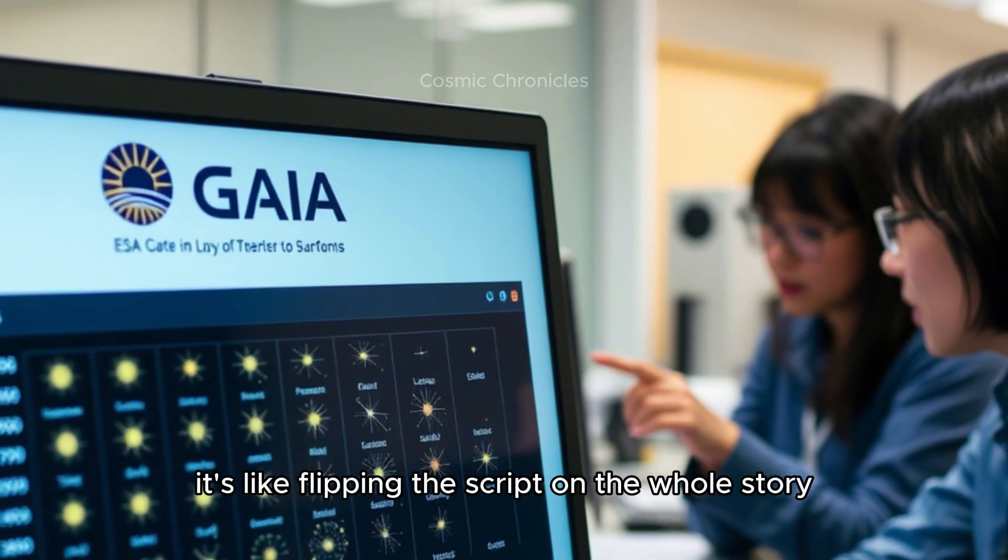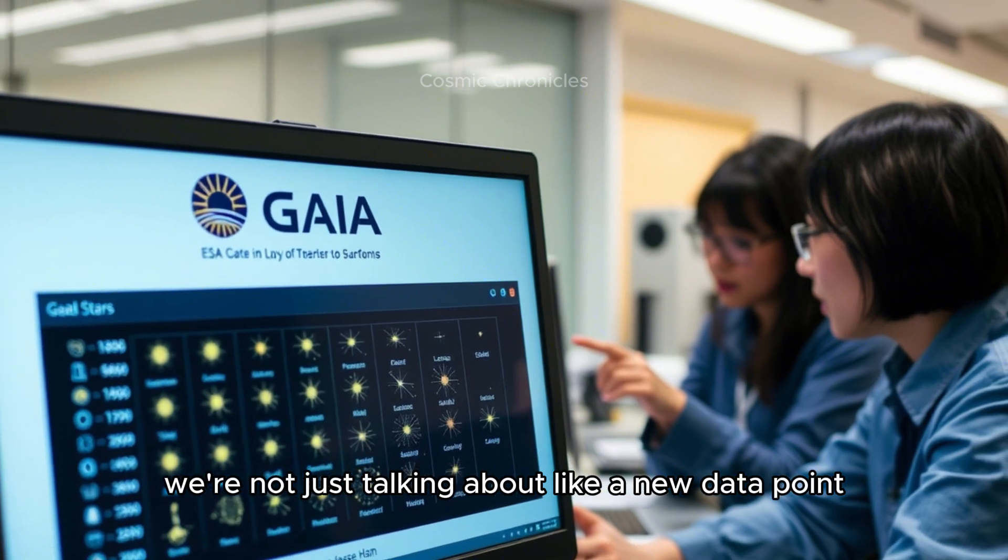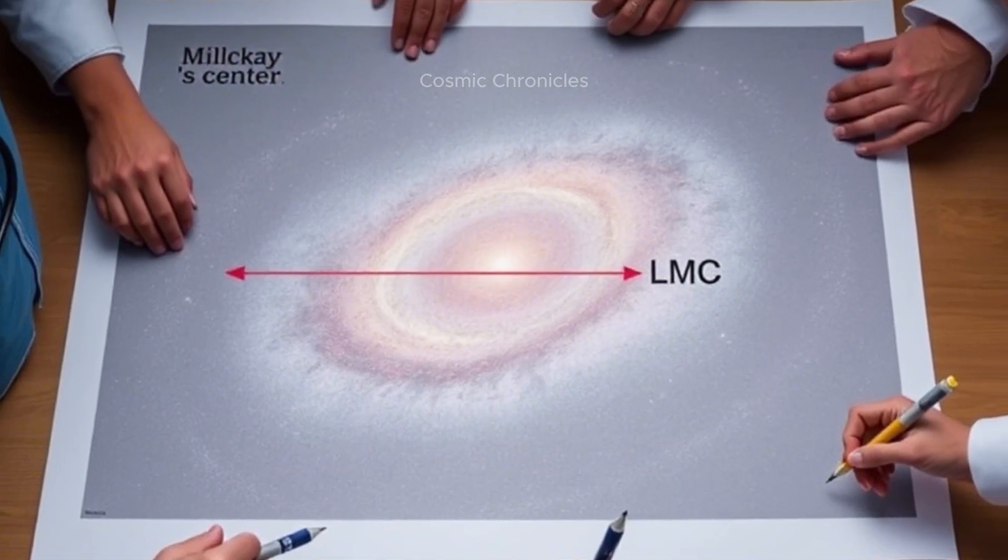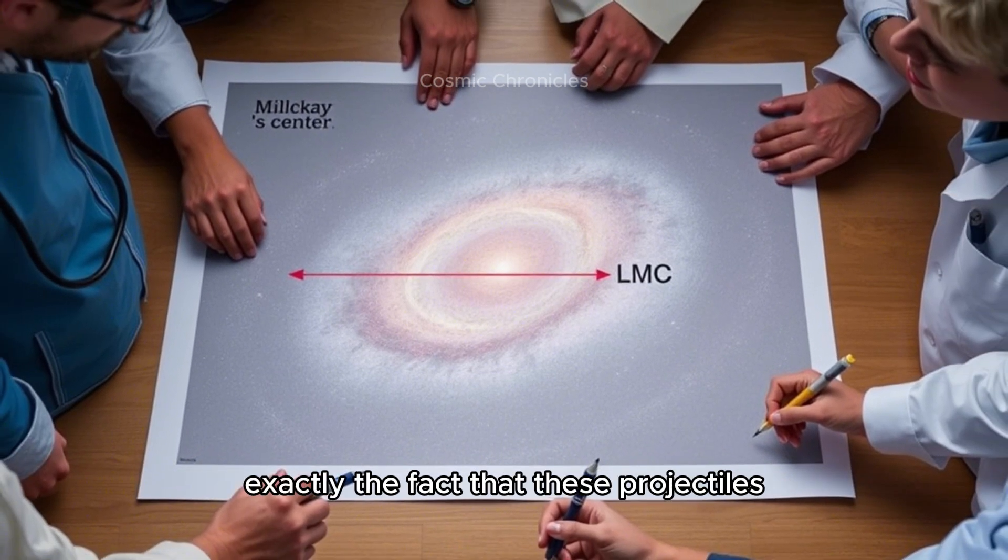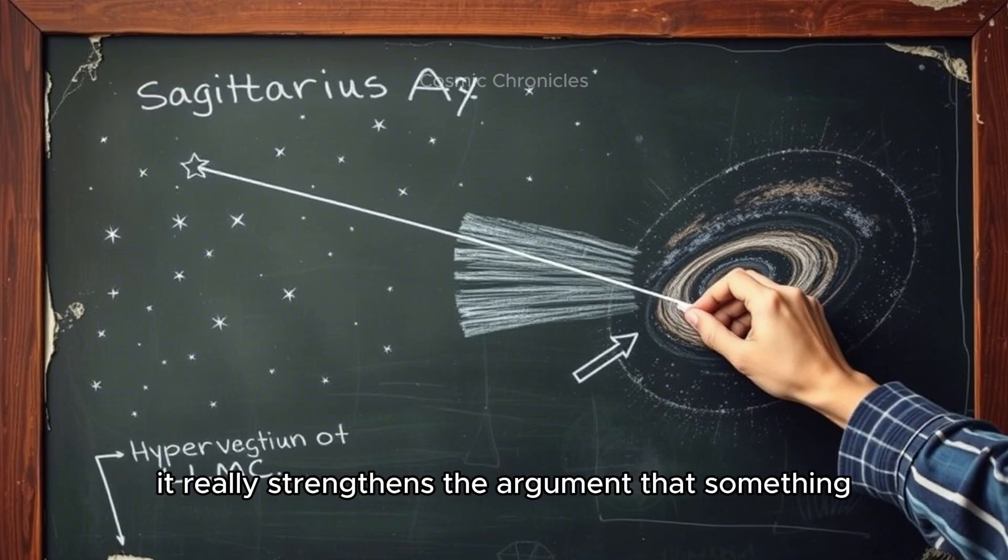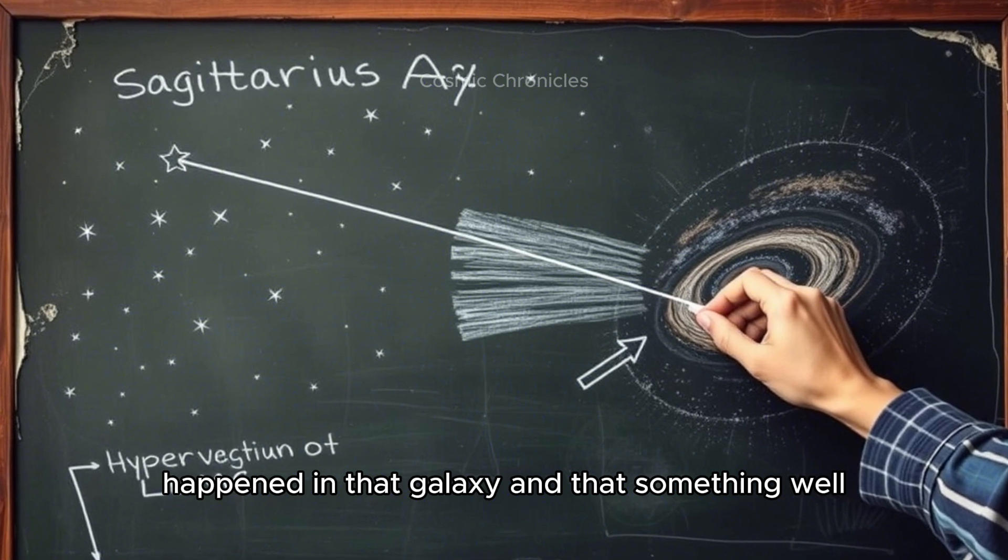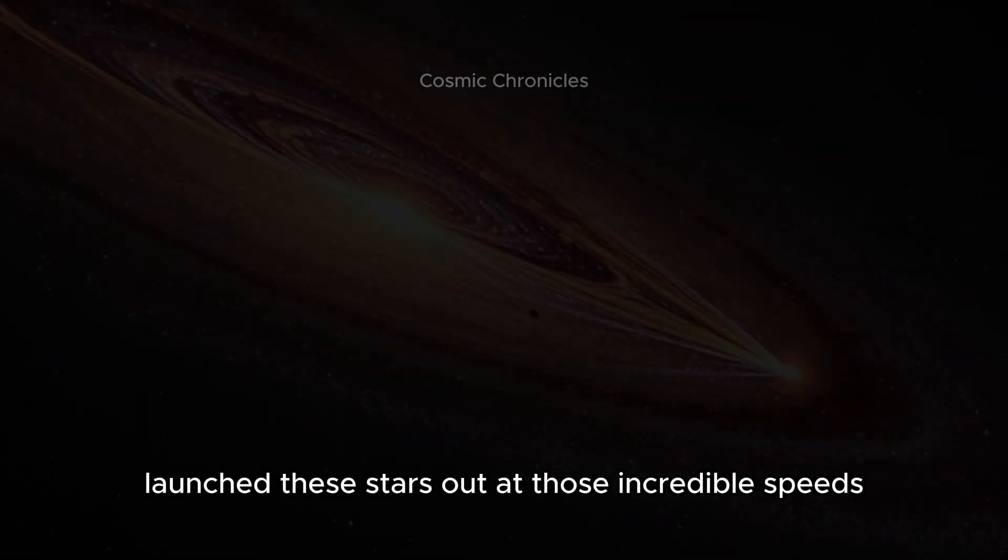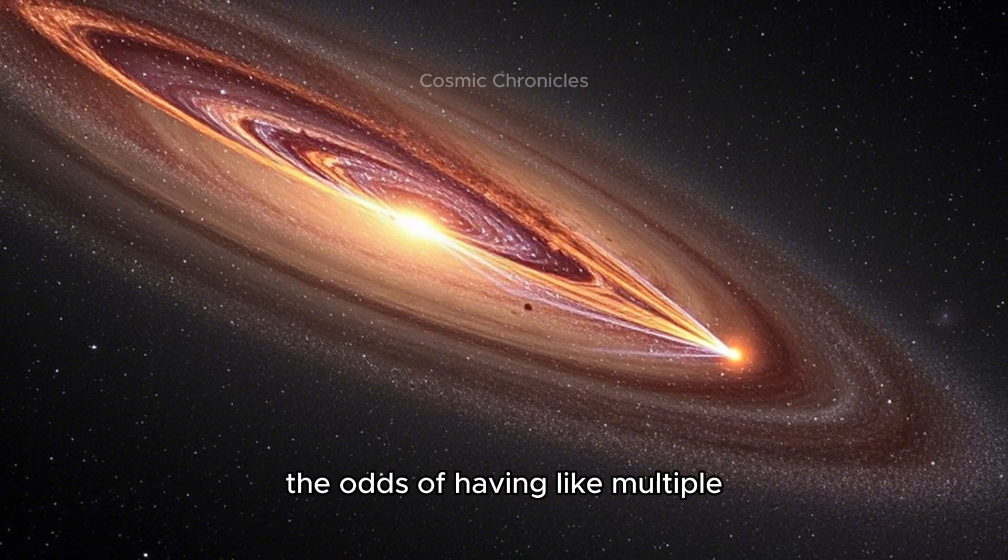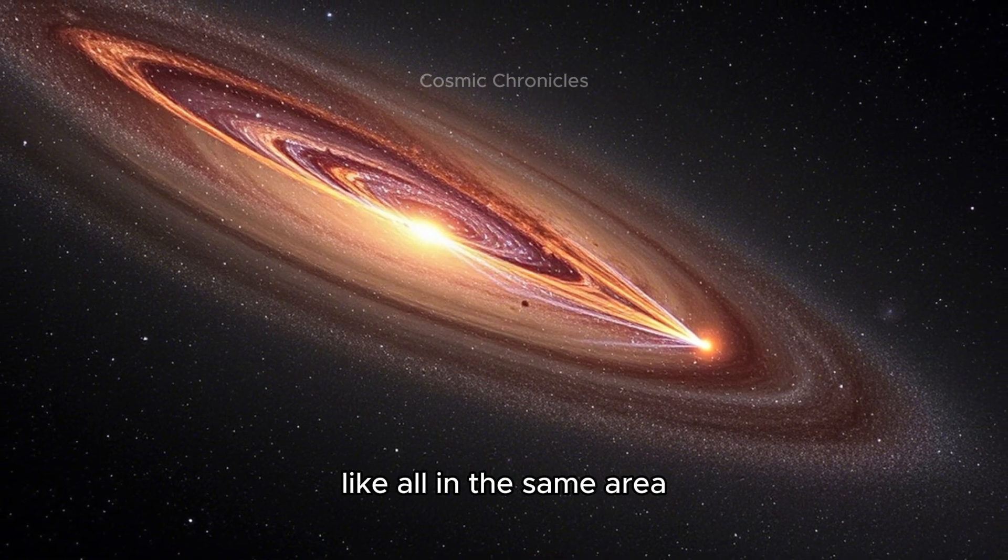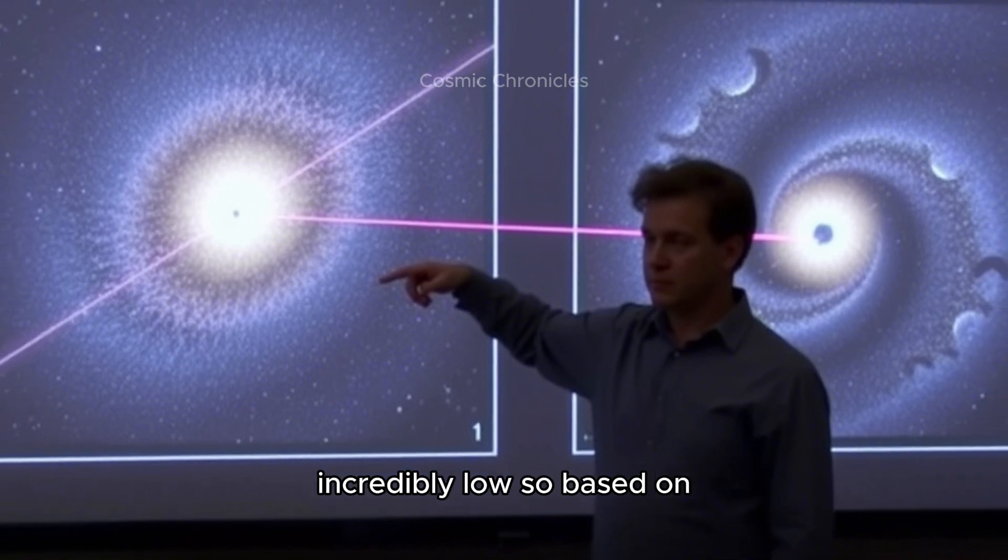That's a pretty big deal. It's like flipping the script on the whole story. We're not just talking about a new data point - we're potentially talking about rewriting part of the story of how galaxies work. The fact that these trajectories are converging on the LMC really strengthens the argument that something very powerful gravitationally happened in that galaxy, and that something most likely launched these stars out at those incredible speeds.